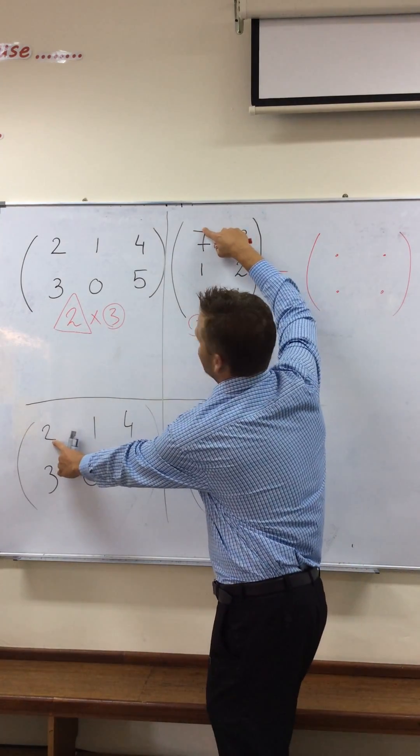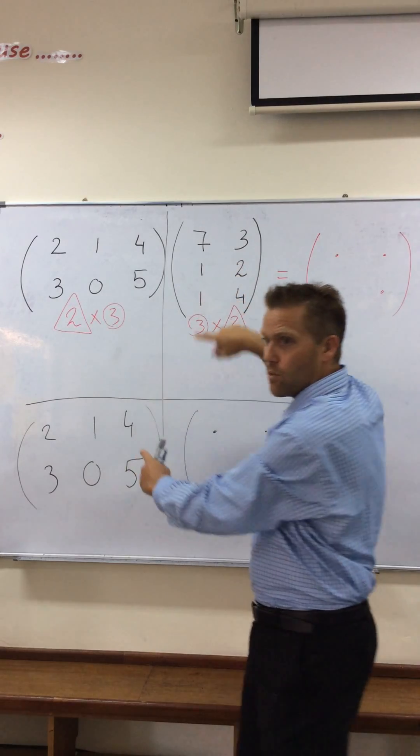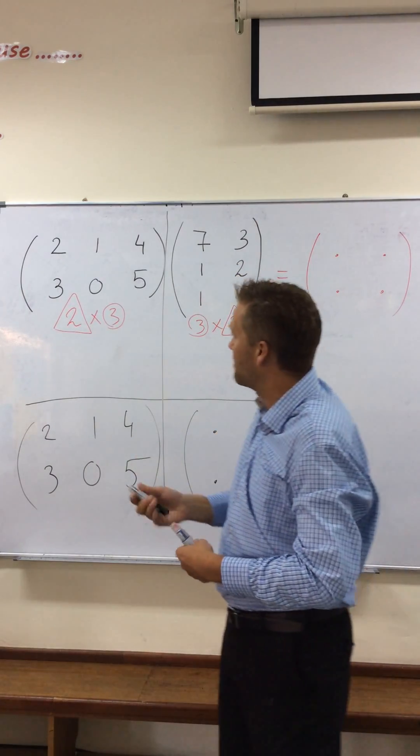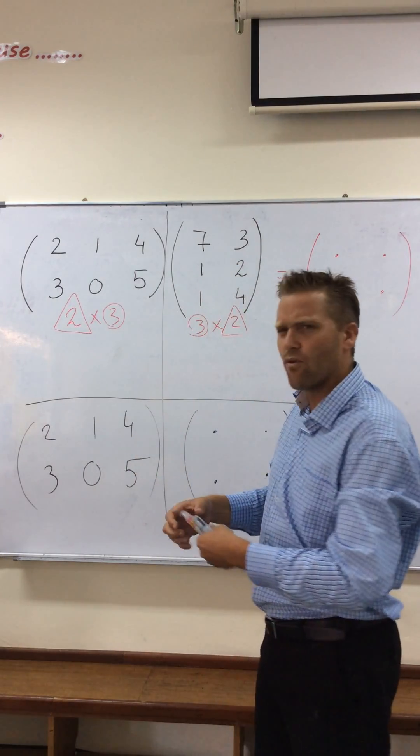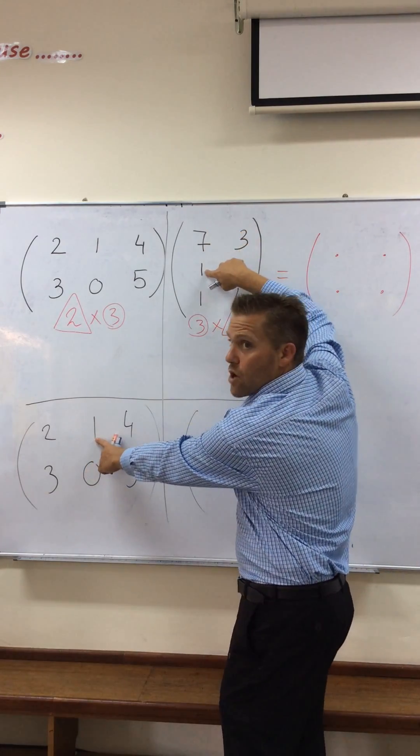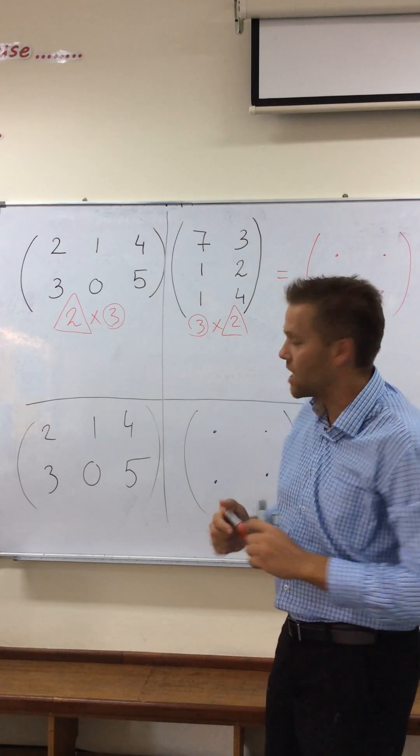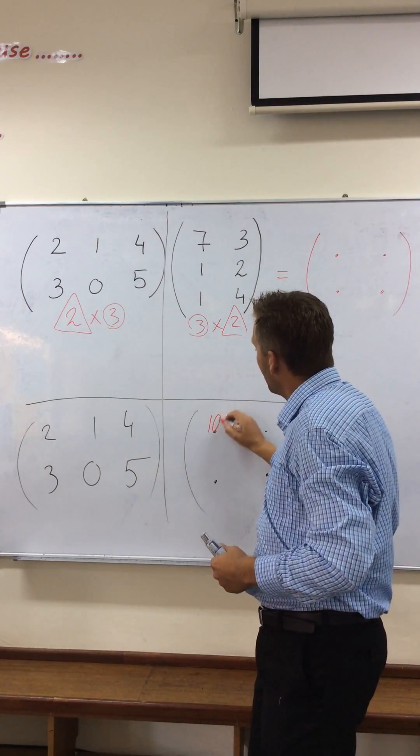So I have to do two times seven plus one times two plus four times one. And check my other videos on my website explainingmaps.com for a little bit more detail. But 14 plus one is 15 plus four. That is going to be 19. So this value will be 19.